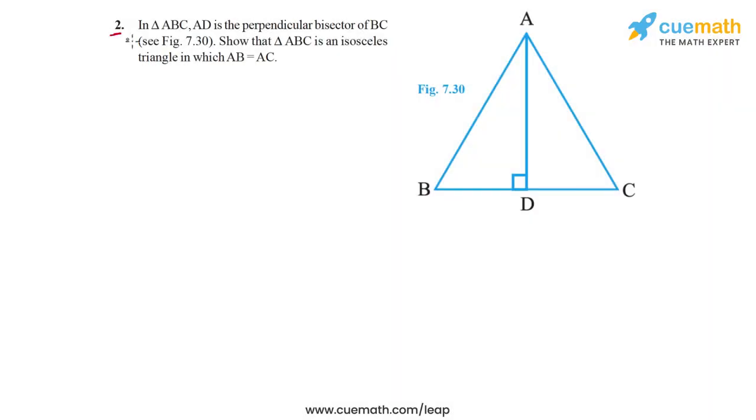In question 2, the problem statement says in triangle ABC, in this figure, AD is the perpendicular bisector of BC. We have to show that triangle ABC is isosceles, in which AB must be equal to AC.